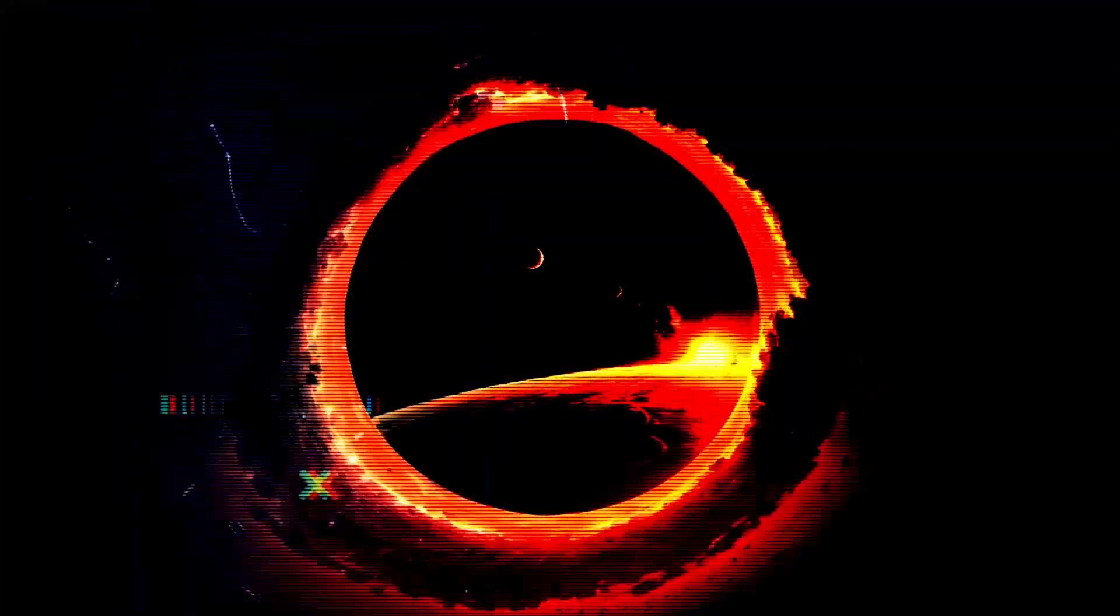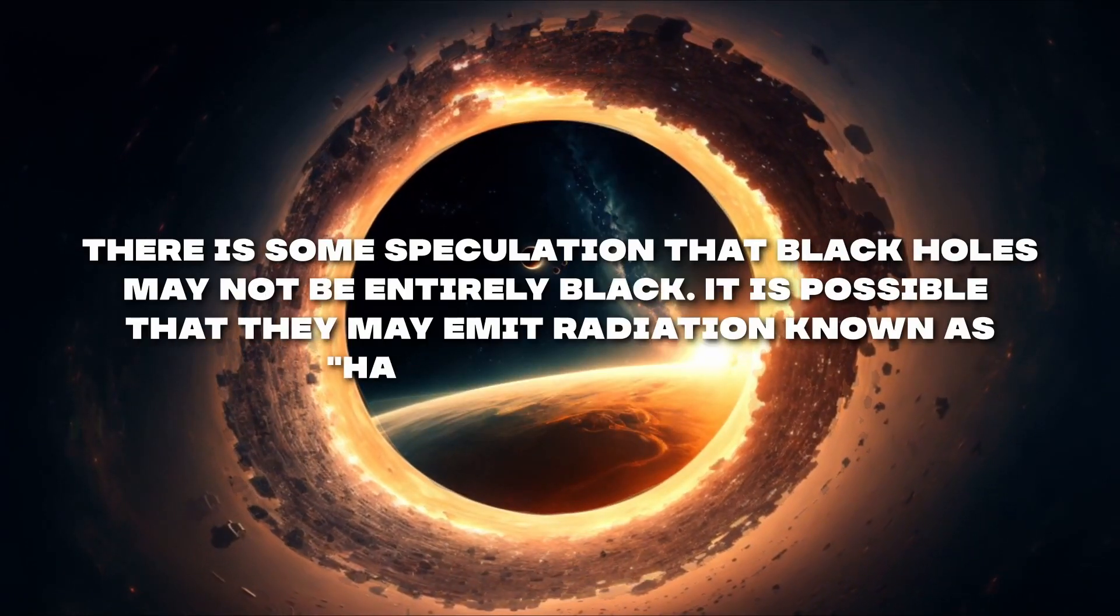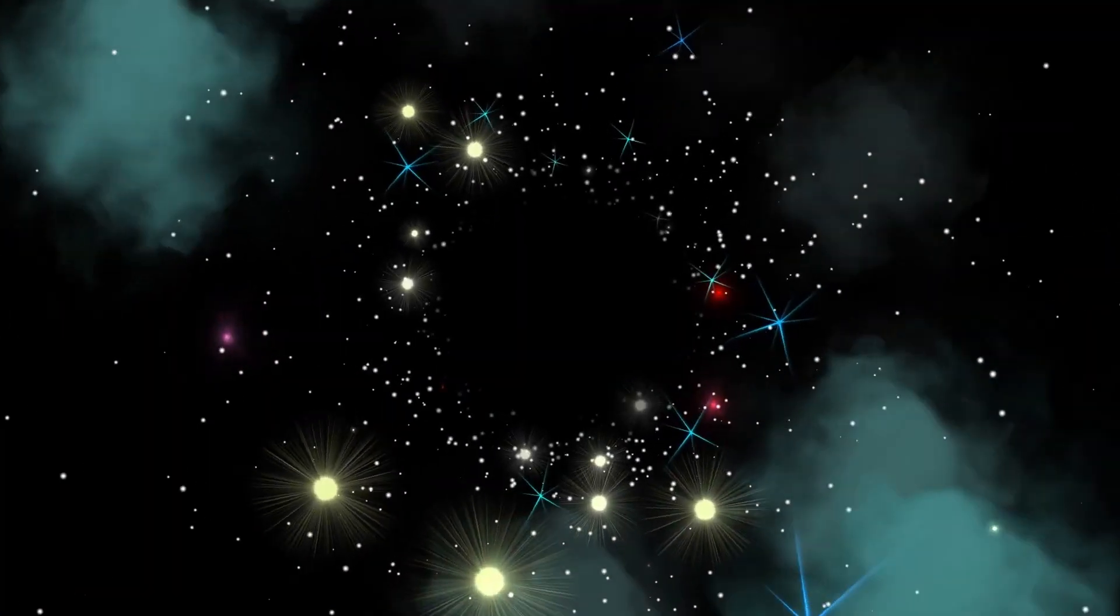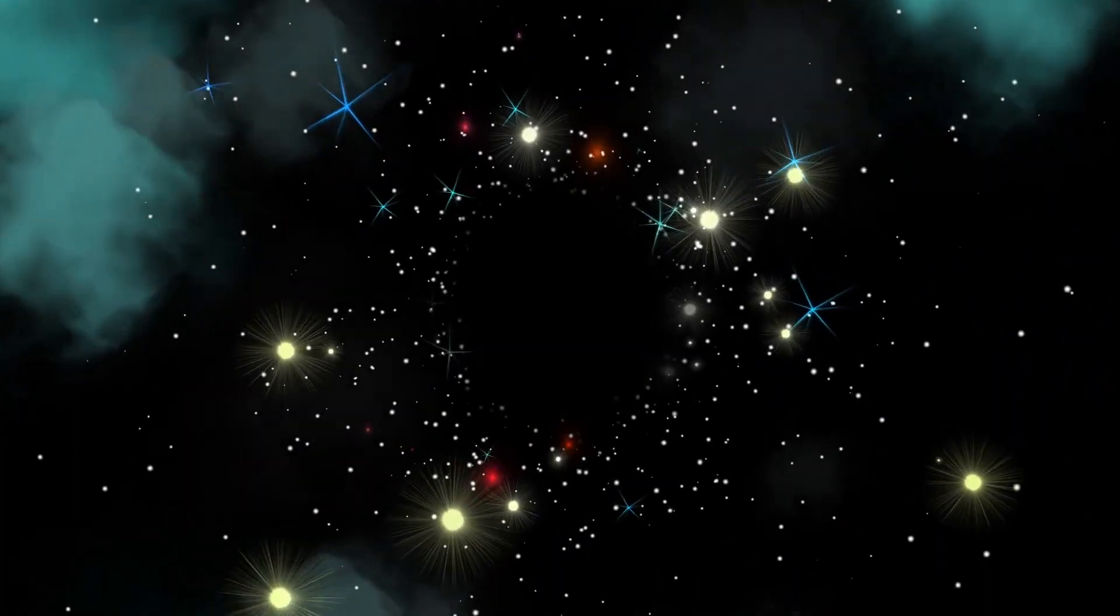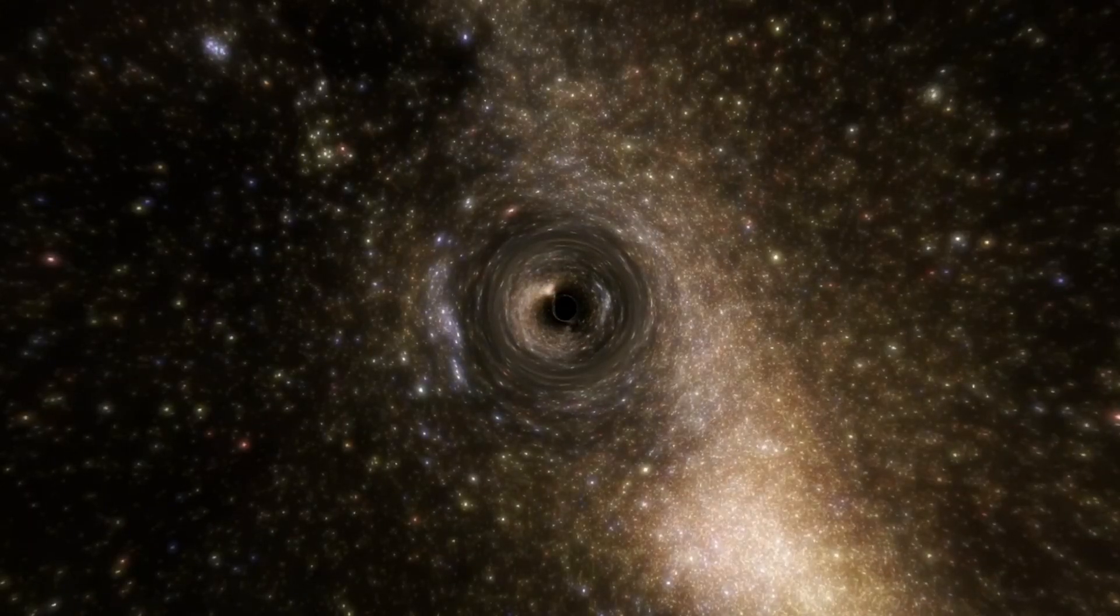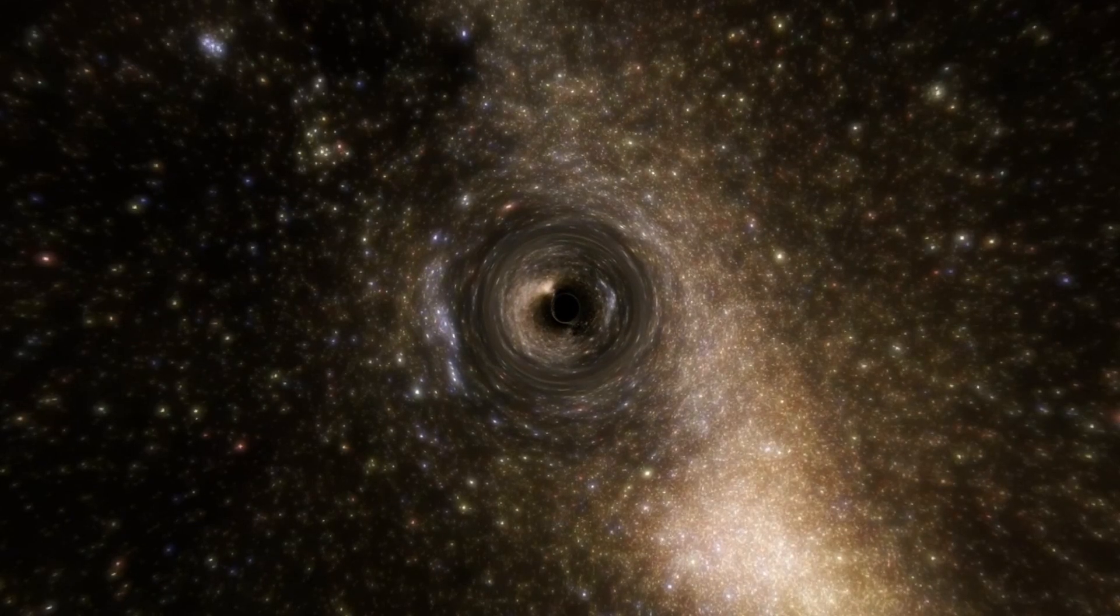However, there is some speculation that black holes may not be entirely black. It is possible that they may emit radiation known as Hawking radiation. This radiation is thought to be caused by quantum fluctuations of space-time near the event horizon, and it could allow small amounts of matter and energy to escape the black hole over very long periods of time. This process is very slow, and it would take an incredibly long time for a black hole to evaporate completely through this process.